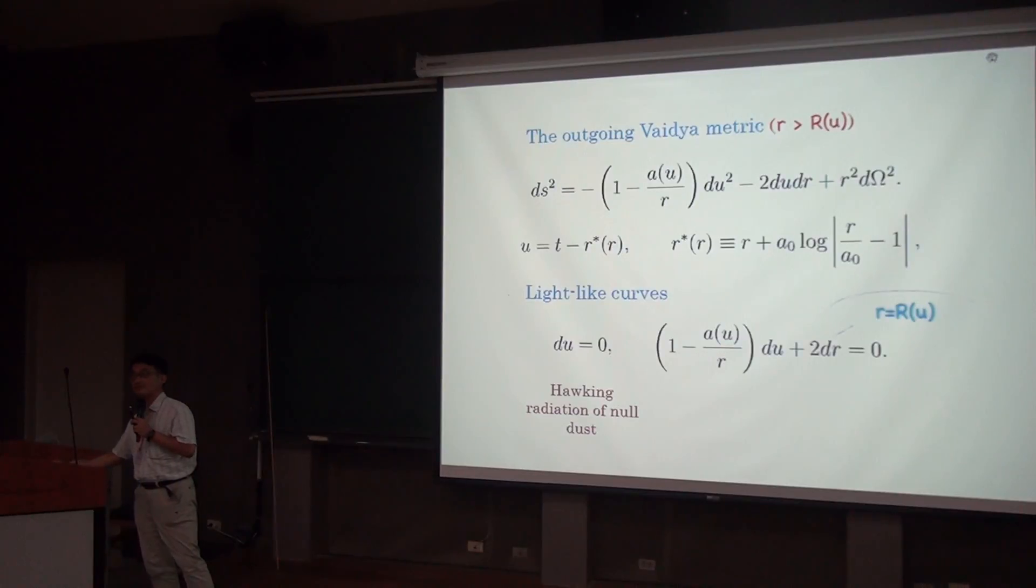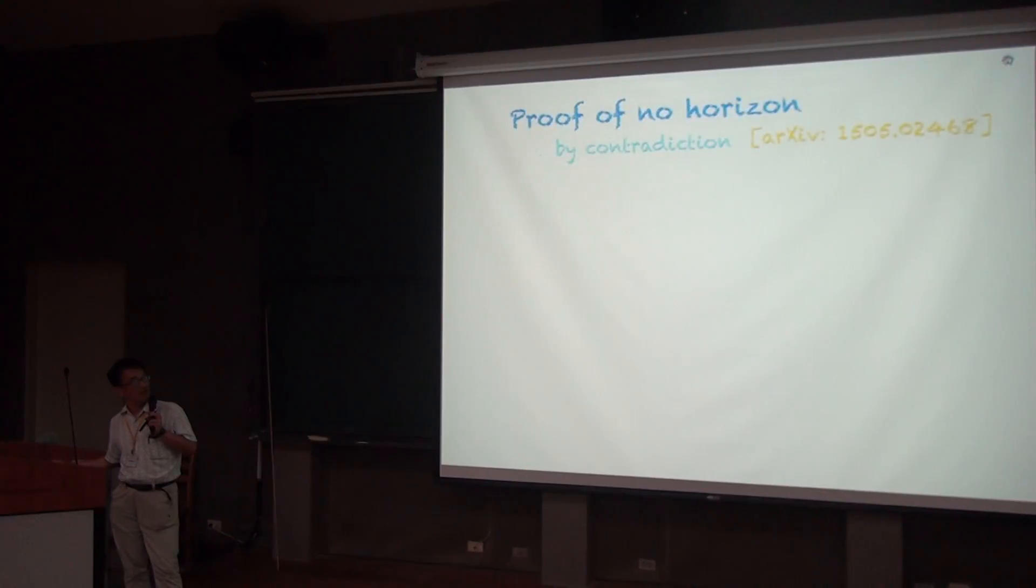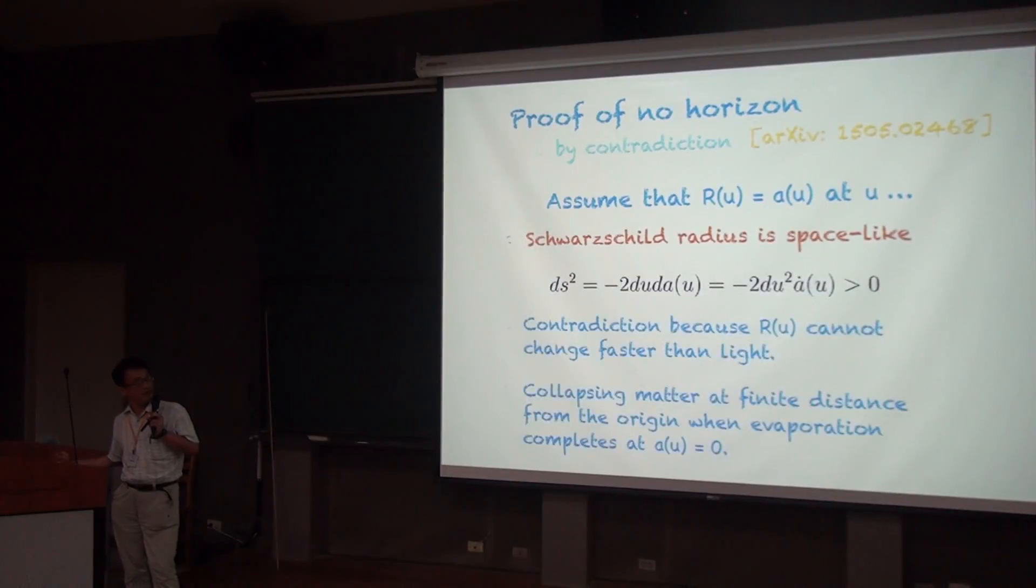...R of U is equal to A of U at some instant, U naught, which is where they would cross. At some point, I have capital R equal to A, but I can always consider little r equal to A as the trajectory of a point on the Schwarzschild radius.